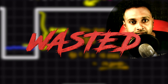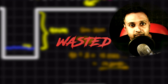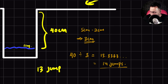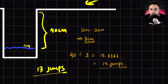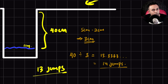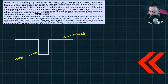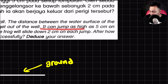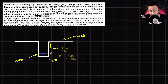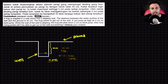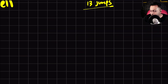The actual answer is 13 jumps. This is the problem — we use mathematics to solve a problem, but we don't take only numbers into consideration. We need to understand the problem and the logic of the question first. The question says the frog can jump as high as 5 cm, and because of the slippery wall it comes back down 2 cm, so every jump it reaches a net 3 cm height.